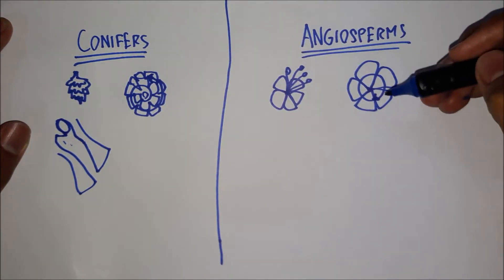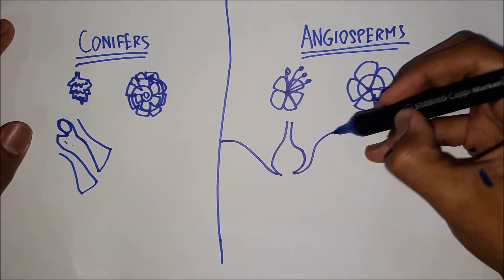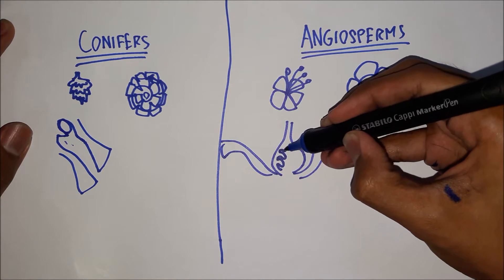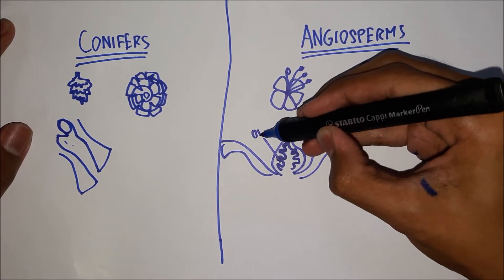While in angiosperms, the ovules are enclosed in the ovary. Like that. Those are the ovules.